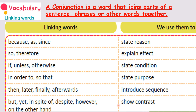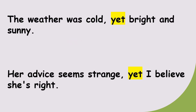I hope you are all clear now, children. Let's see some sentences with 'but' and 'yet.' Look at the screen — it's not in your textbook. 'The weather was cold, yet bright and sunny.' 'Her advice seems strange, yet I believe she is right.' That shows 'even though': 'The weather was cold, even though it was bright and sunny.' 'Her advice seems strange — very weird advice — but I believe she is right. Yet I believe she is right.'